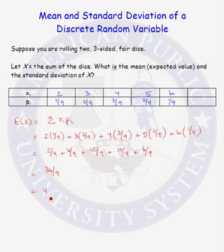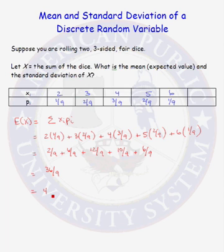So in the long run, if we kept rolling two dice, wrote down the sum, rolled the dice again, wrote down the sum, and did this many, many times, and then averaged all of those numbers, the average would come out to be 4. The expected or long-run average of the sum of two three-sided dice is equal to 4.